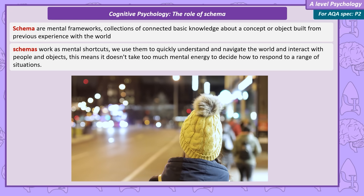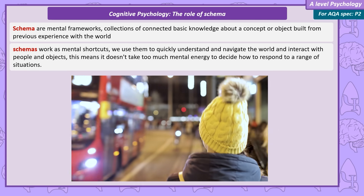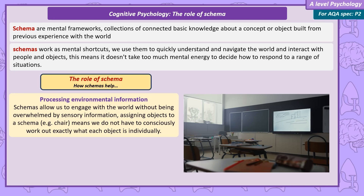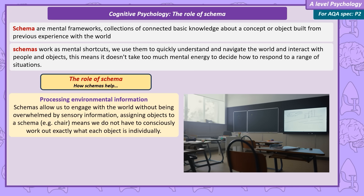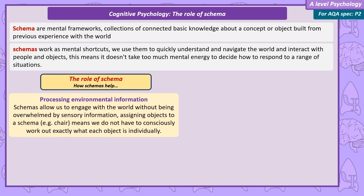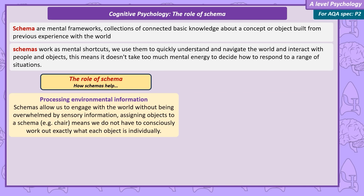We use schemas to quickly understand and navigate through the world and interact with people and objects. This means it doesn't take too much mental energy to decide how to respond in a range of situations. There are advantages to using schemas to navigate through the world, but depending on them as shortcuts also causes some serious problems. The main advantage is they allow us to process lots of information very quickly. Imagine walking into a classroom without any schemas at all — if you had to process everything from scratch, you'd be overwhelmed by sensory information and have to consciously work out what each object was and how to act. By using schemas, we can simplify the world.